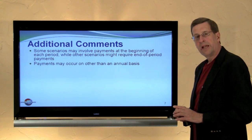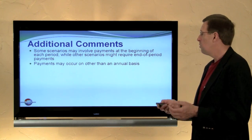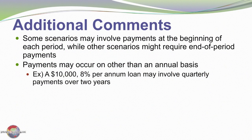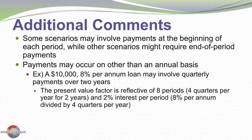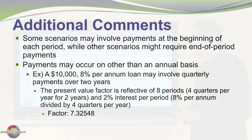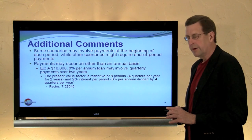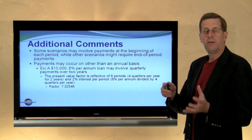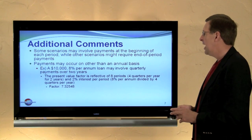Also consider that some payments may occur on other than an annual basis — we might have monthly or quarterly payments. For example, a $10,000 loan at 8% per annum involving quarterly payments over two years really involves an annuity of eight periods — four quarters per year for two years — and the interest rate per period is two percent, one-fourth of the annual rate. The present value factor would be 7.325, which is eight periods at two percent per period. So we can modify our calculations based on the number of periods and the interest rate per period; it doesn't have to be tied to annual amounts.